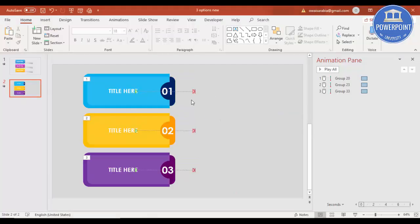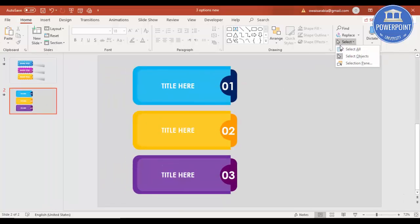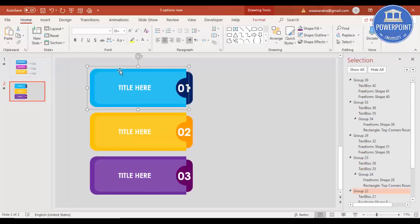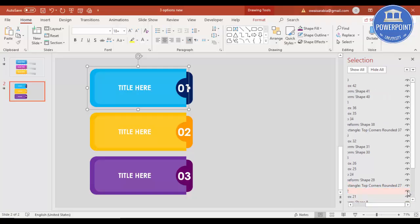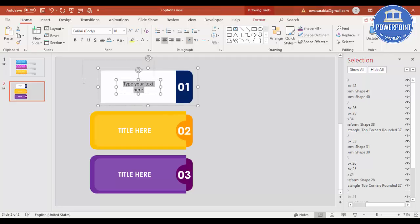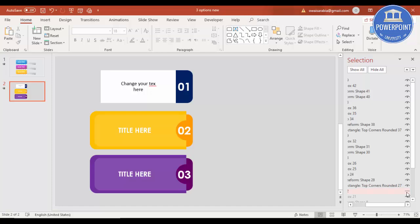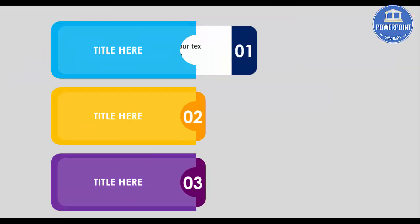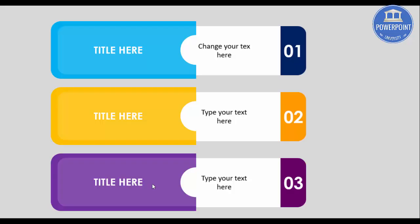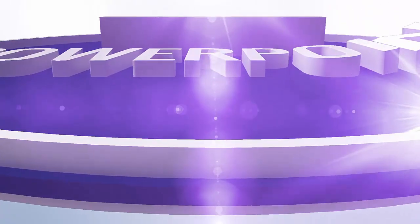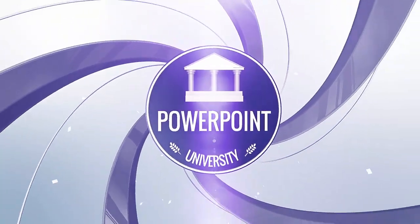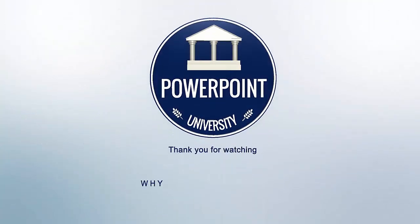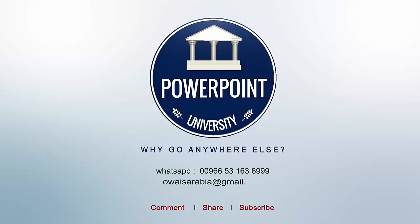If you find it difficult to change the text while elements overlap, go to Home, Select, and open the Selection Pane. Find the group you want — for example Group 22 — toggle its visibility to unhide it, then change the text. Click the visibility icon again to bring it back. When you play now, the updated text is shown. You can also add a shadow effect if required. That's it — thank you for watching, and don't forget to subscribe to PowerPoint University. See you soon with more interesting stuff. Goodbye.